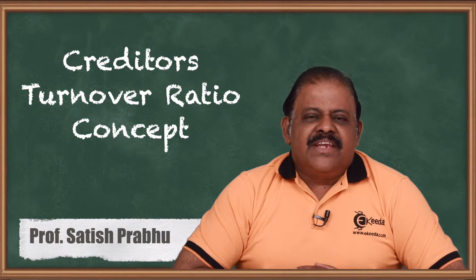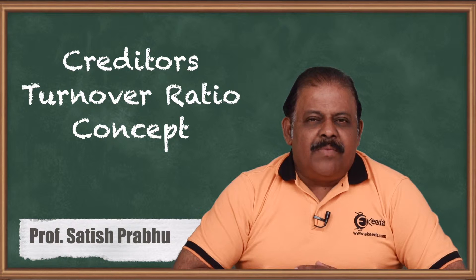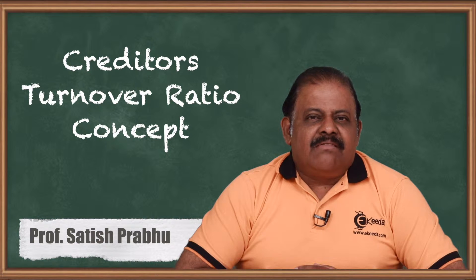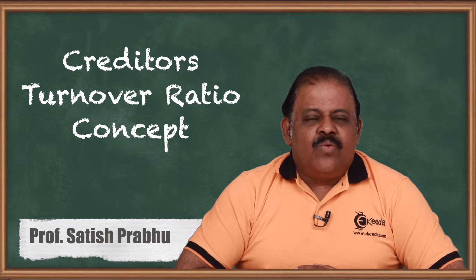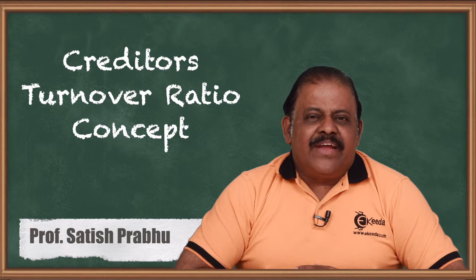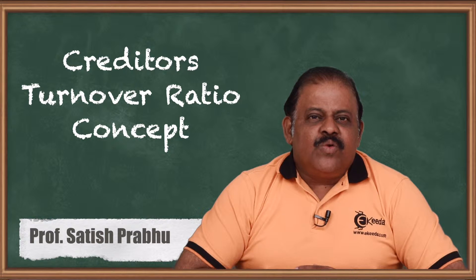Every business is required to get raw materials and other things from suppliers. These suppliers provide the facility of credit — that means we are required to buy now and pay later after one month or two months. Every business gets this facility of enjoying the credit period, and this is one of the requirements of every business because it helps to raise the required amount of working capital.